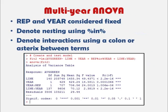We may now want to look at a multi-year ANOVA, considering Rep and Year as fixed effects. To denote nesting — as in the case of Rep within Year — we use the syntax percent in percent. To denote interactions, use either a colon or an asterisk. The ANOVA output is similar to the single-year model. We see significant effects of Line, Year, Rep within Year, and Line-by-Year interactions.